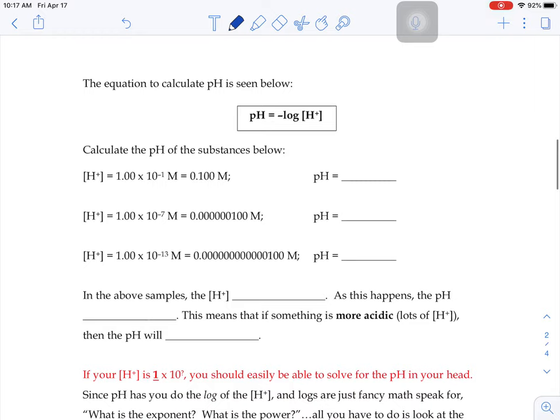So the equation to calculate the pH of a substance is you would take the negative log of the H+ concentration, whatever that is. So if they give you the H+ concentration as 1 times 10 to the negative 1, we would do the negative log of that number. Well, remember, log is just a fancy math way of saying what is the exponent? What's the power?